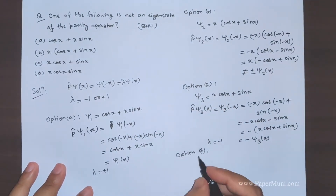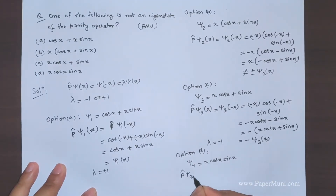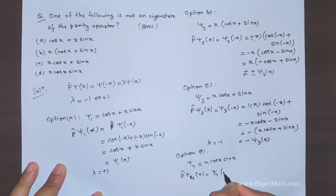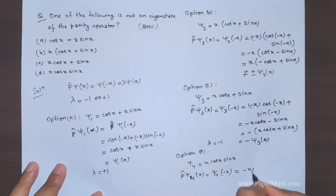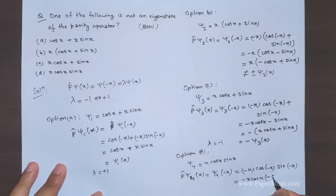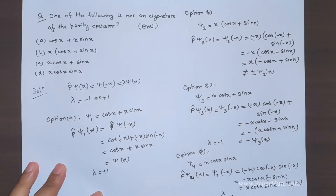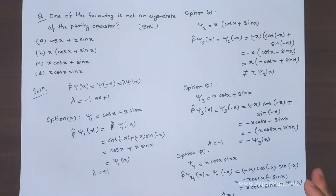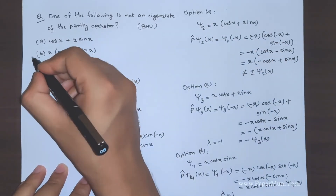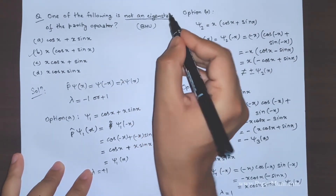For option D, ψ₄ = x·cos(x)·sin(x). Operating the parity gives ψ₄(-x) = (-x)·cos(-x)·sin(-x) = (-x)·cos(x)·(-sin x) = x·cos(x)·sin(x) = ψ₄. So λ = +1 and it is an eigenstate. Therefore, the option that does not satisfy the eigenvalue equation of the parity operator is option B.